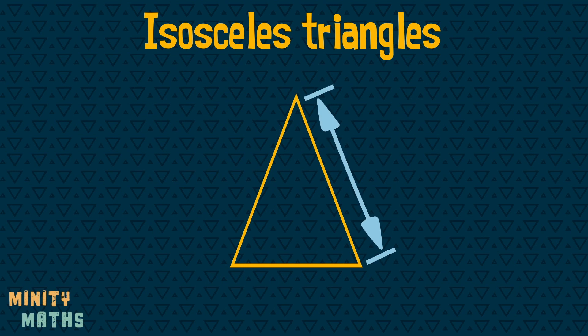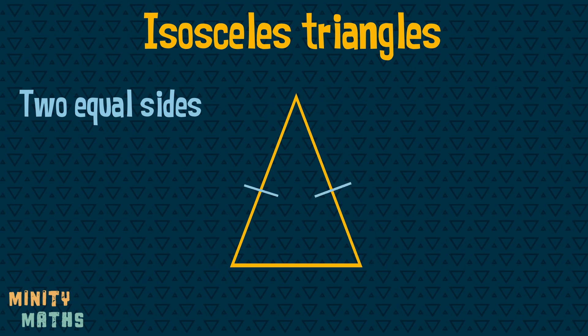Isosceles triangles have two equal sides which again are often indicated by these lines. They also have two equal angles at the base, named base angles.